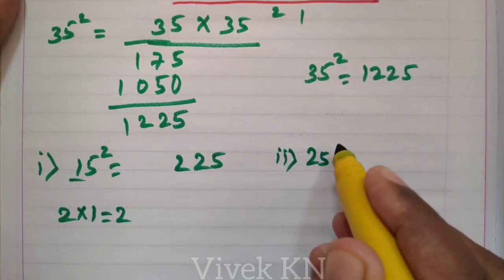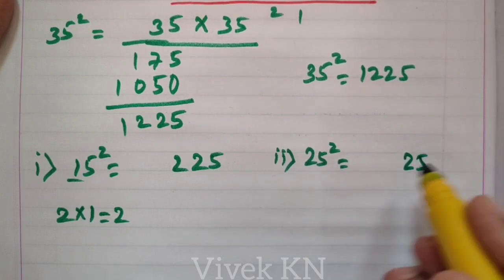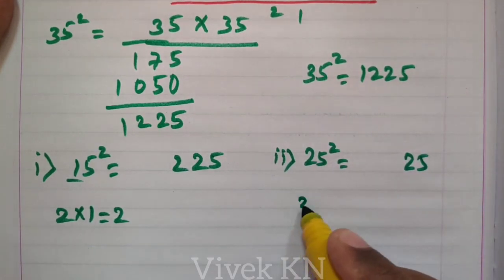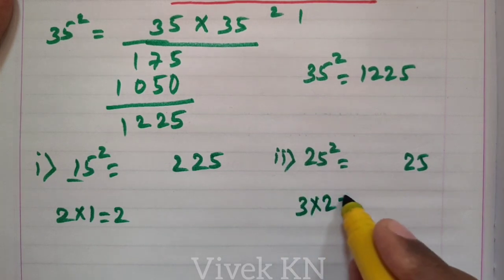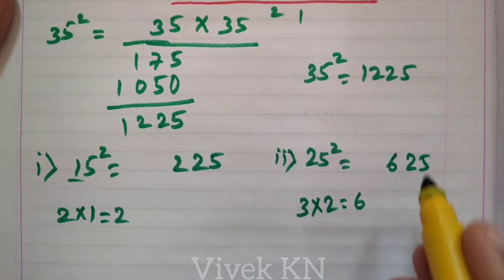Next, 25 square. 5 square is 25. The number that comes after 2 is 3. 3 into 2 is 6. So 25 square is 625.